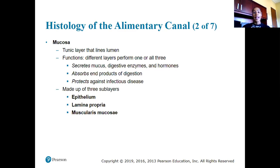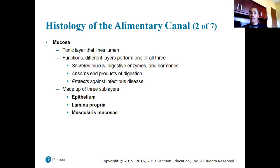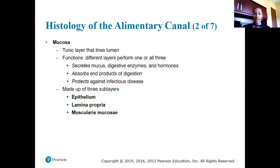The mucosa is a tunic layer that lines the lumen — the open space that food and liquid travel through. Depending on what part of the alimentary canal we're looking at, the mucosa can perform secretion of mucus, digestive enzymes, and hormones; absorption of end products of digestion; or protection against disease through lymphocytes that protect from pathogens.